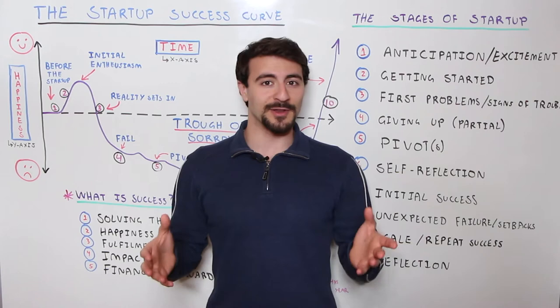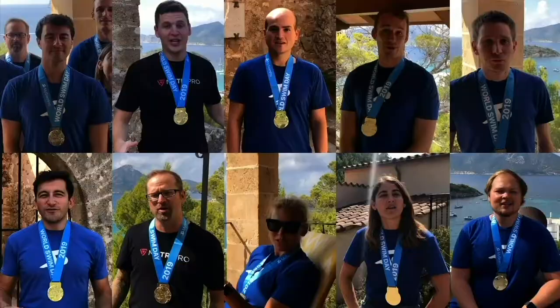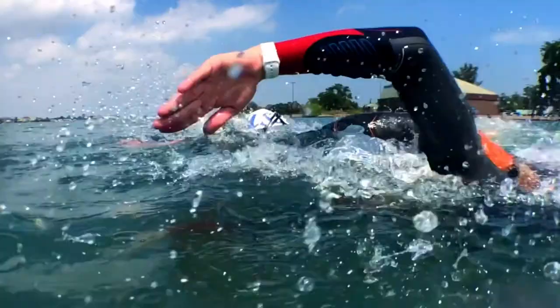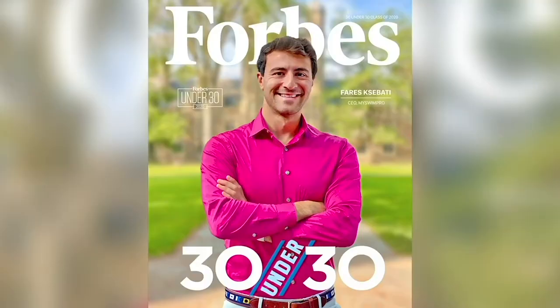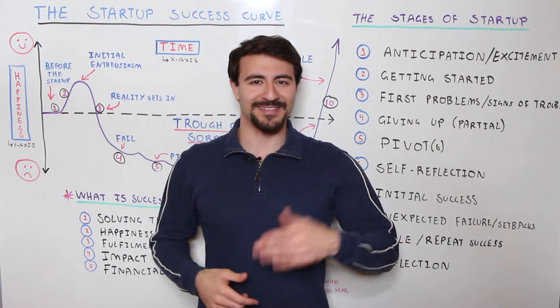If you're new to the channel, welcome. My name is Faris Sabati. I'm the co-founder and CEO of MySwimPro, and in the last five years or so we've built a global technology and media company with a distributed team spanning over 10 different time zones. The company is doing over seven figures in revenue, we've raised just under a million dollars in outside capital, and the application has been downloaded over 1 million times. In this series I help entrepreneurs take their business to the next level.